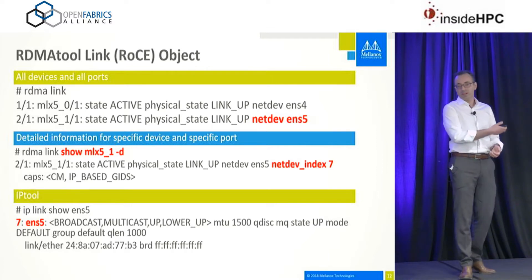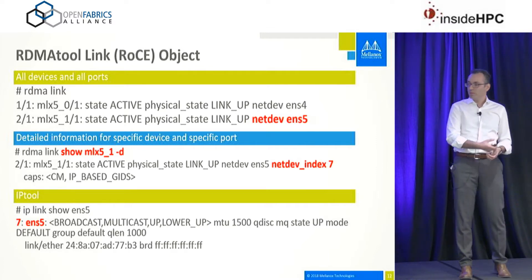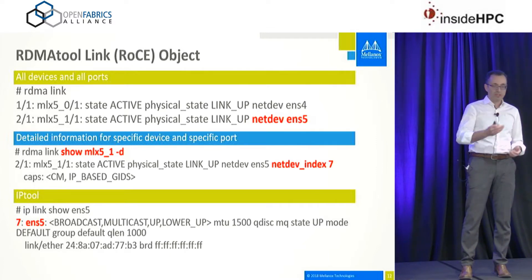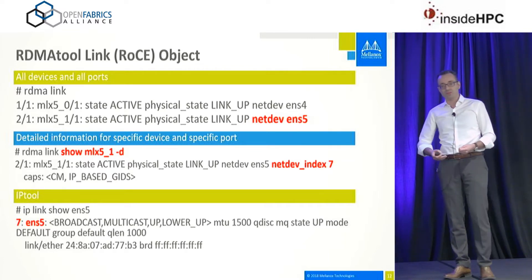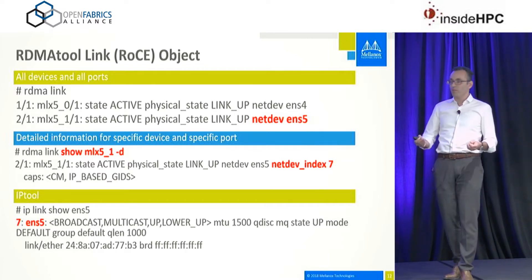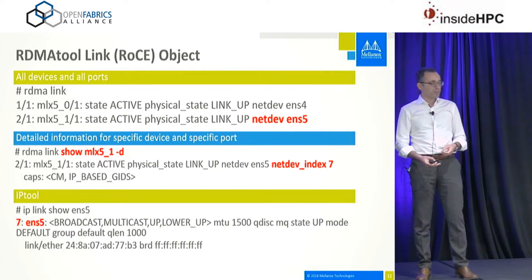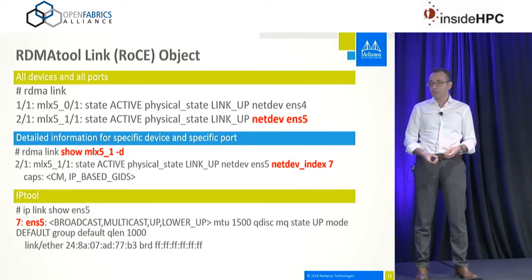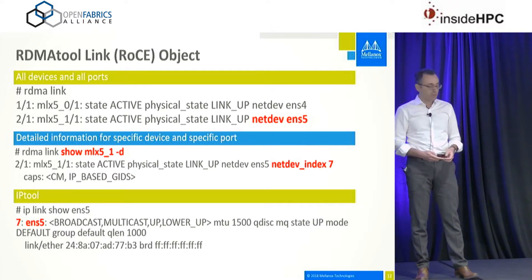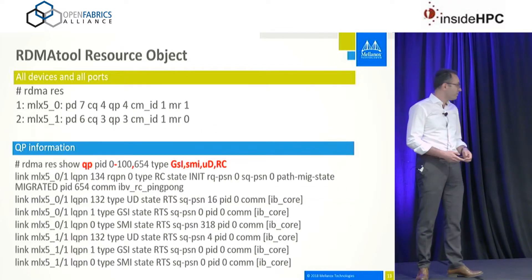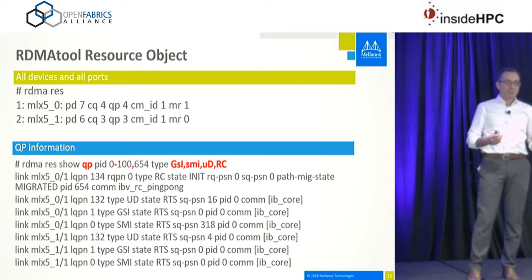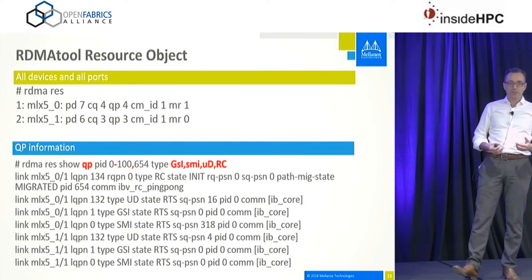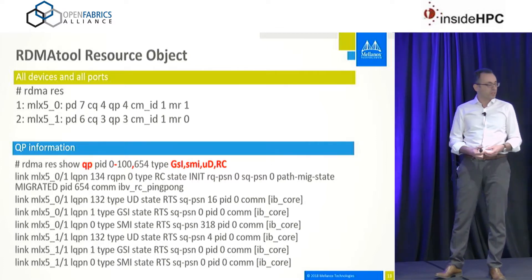Using JSON output format with Python, you can do very complex configuration schemes without any shell processing. For example, you can run rdma tool in JSON format, receive the net device index, and provide it directly to ipconfig to continue its work.